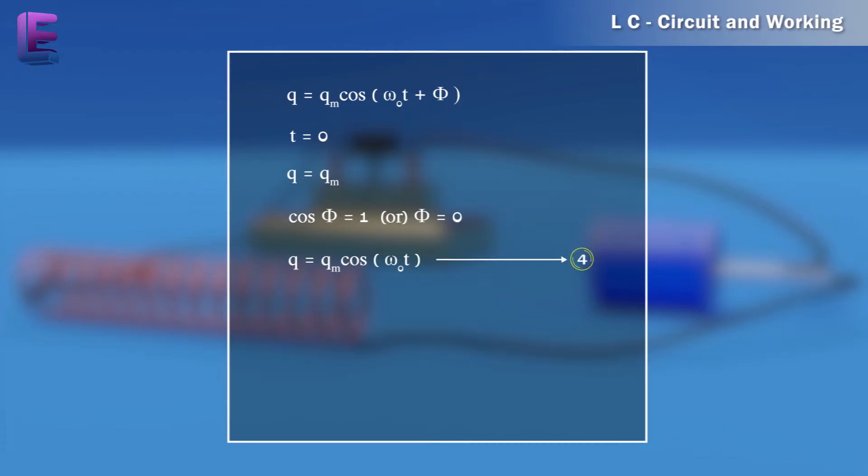As current i equals minus dq by dt, i equals im cos into omega nought t, where im equals omega nought qm.